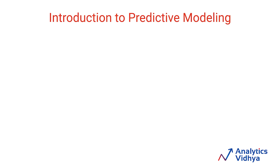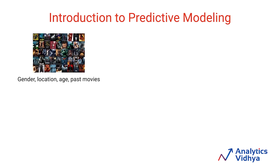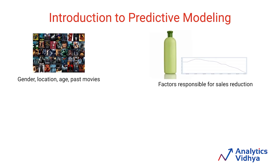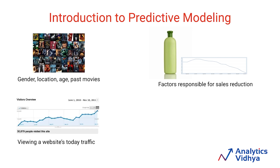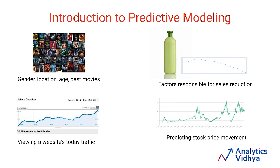Let's do a small exercise where you would need to identify which of the examples represent predictive modeling. First is recommending movies to a user based on user's attributes like gender, location, age and past movies watched. Second, identifying the factors that were responsible for sales reduction of a shampoo product. Third, viewing website's web traffic using Google Analytics, and fourth, predicting whether a particular stock will go up, down or remain the same.